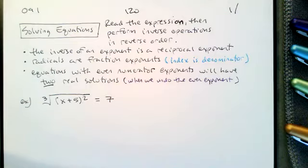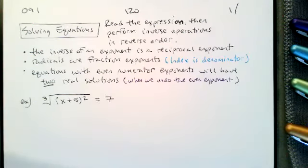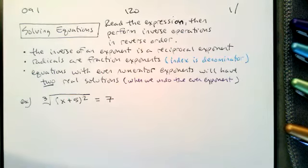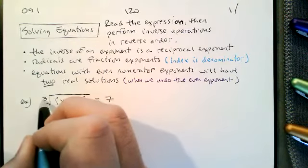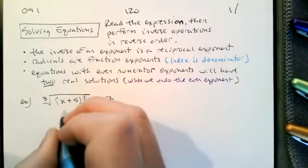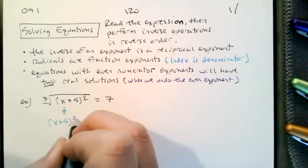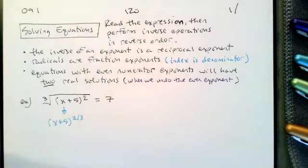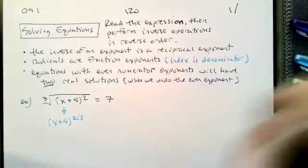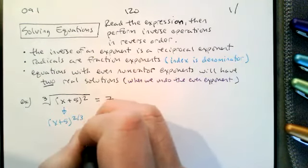Let's look at this equation: the cube root of the square of the sum of x and 5 equals 7. There's a radical with index 3, and the index of the radical is the denominator of the exponent. So I want to rewrite this as (x + 5) to the 2/3 power — instead of seeing three things happening, I see two things happening, all equal to 7.